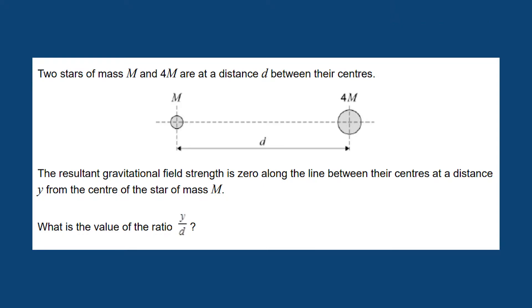Two stars of mass m and 4m are at a distance d between their centres. The resultant gravitational field strength is zero along the line between their centres at a distance y from the centre of the star of mass m. What is the value of the ratio y over d?